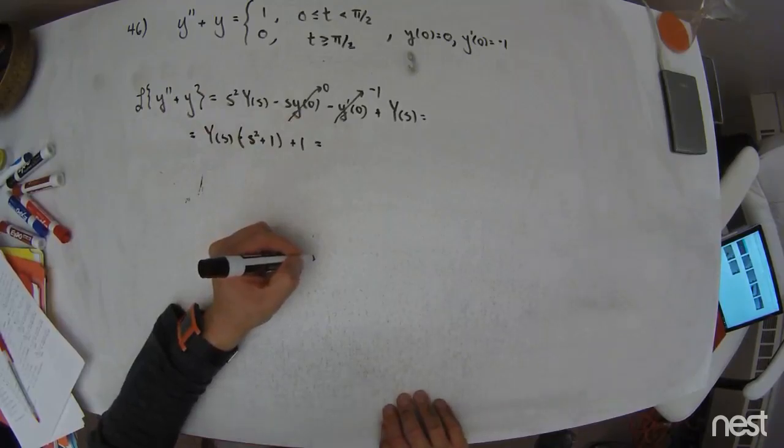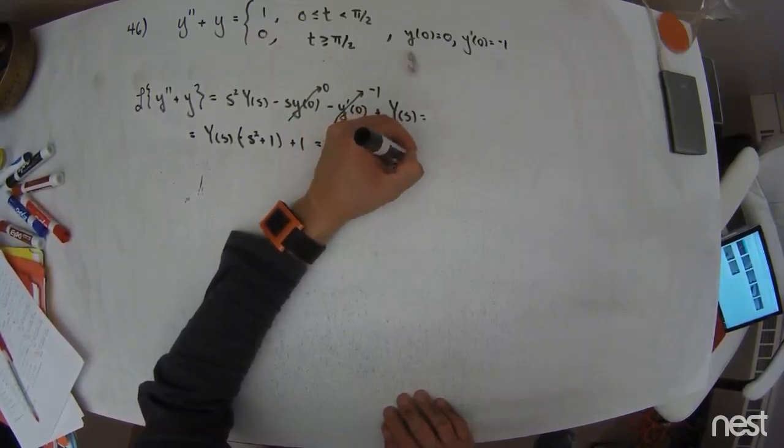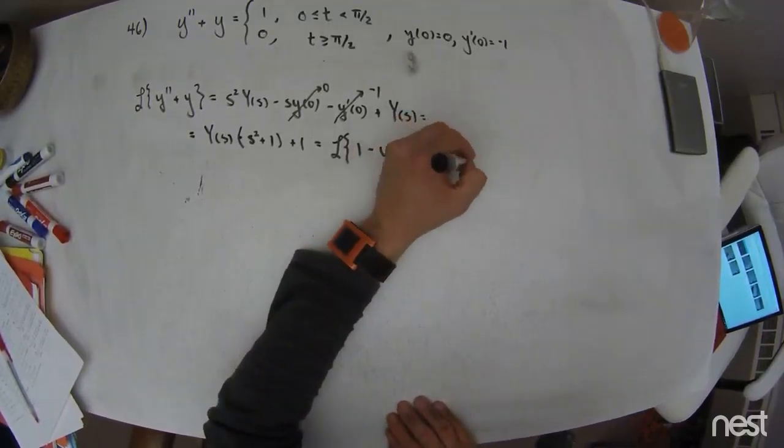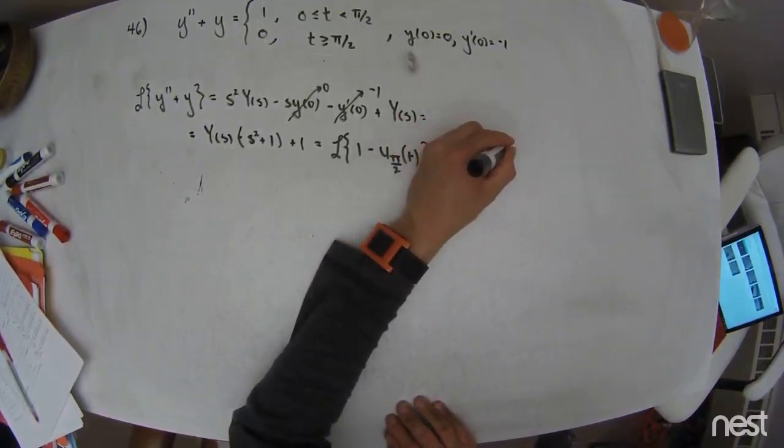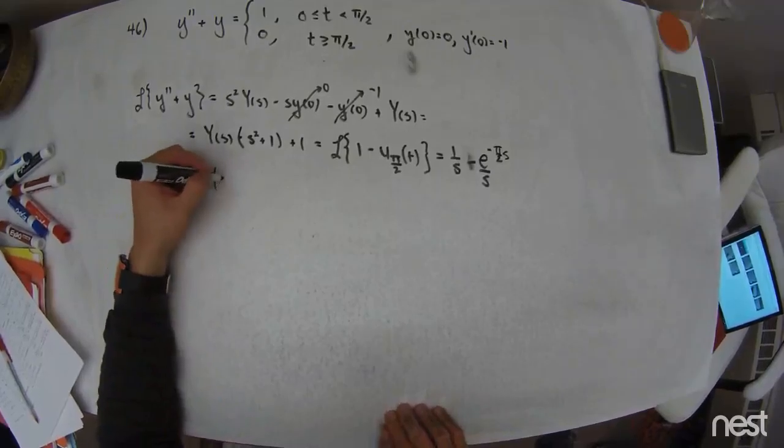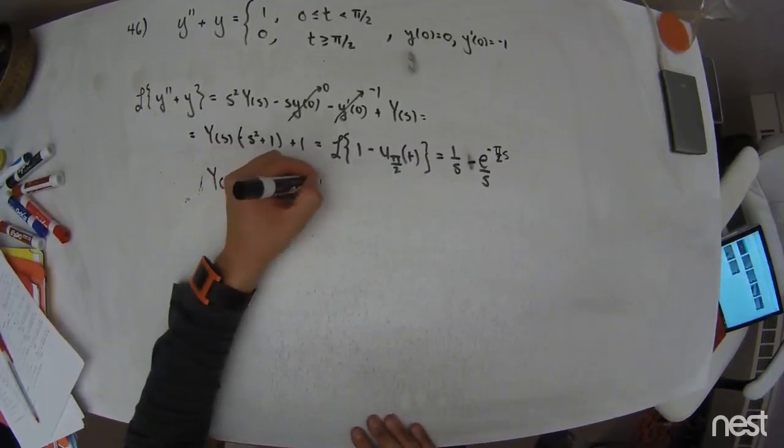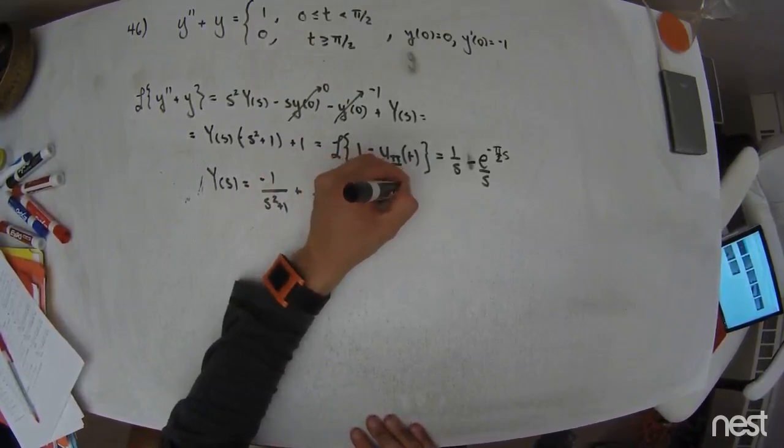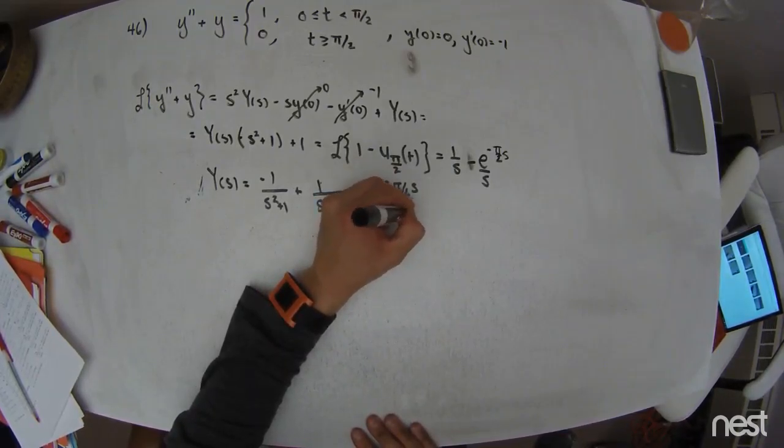And that's equal to the Laplace transform of the right-hand side. So that's the Laplace transform of the number 1 minus the step function of firing off the pi over 2 units in time to shut it down for the rest of time. The Laplace transform here is going to be 1 over s, or no, minus e to the negative pi over 2 times s over s. The Laplace transform of the step function. So capital Y of s, you're going to be equal to negative 1 over s squared plus 1, plus 1 over s times s squared plus 1, minus e to the negative pi over 2 times s. What a horrible notation that was. Divided by s times s squared plus 1.